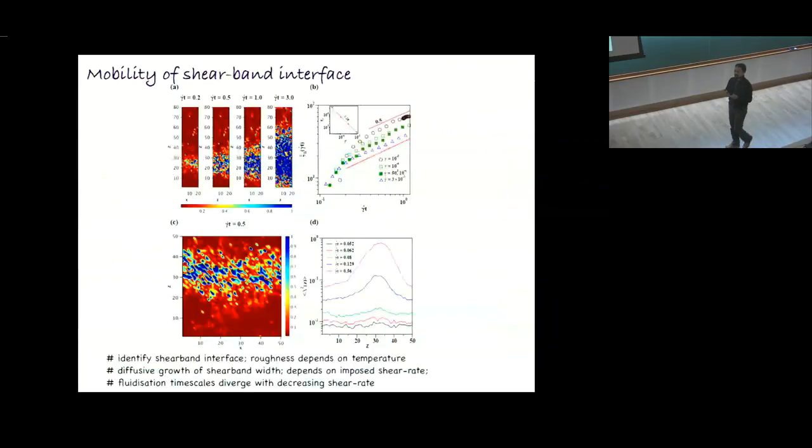We can ask how does the shear band grow. It's a diffusive process. The diffusion constant of how the interface is invading the system depends again on the shear rate. This is also something that you'd expect. The slower the shear rate, the more time it takes for the system to get fluidized.